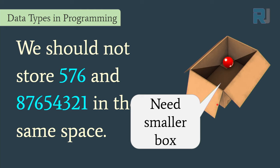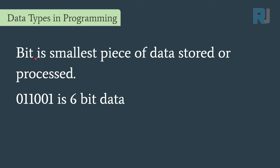We use data types to allocate space efficiently. Before that, we need to understand the meaning of a bit. A bit is the smallest piece of data that is stored or processed. For example, 01110001 is an 8-bit value. Data is stored in a computer or memory in terms of bits — zeros and ones. Everything is converted to zero and one, then processed and stored.